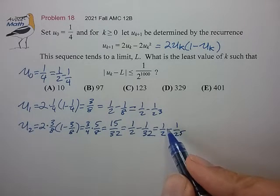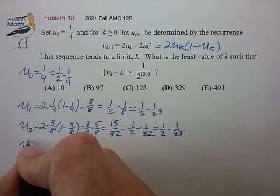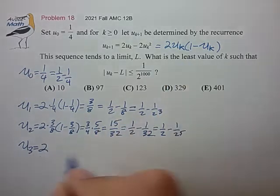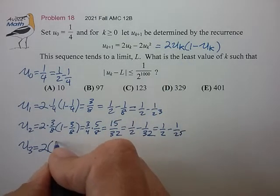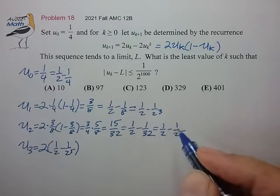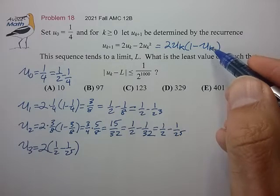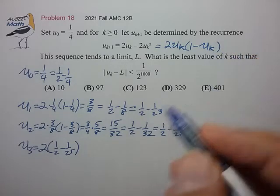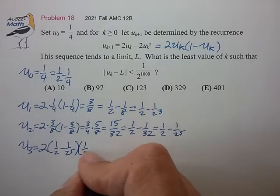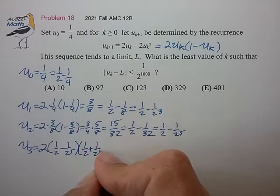And I can use this now to calculate u₃, with 2 times 1 half minus 1 over 2 to the fifth. And now 1 minus this uₖ is a number that's just above 1 half by 1 over 2 to the fifth plus 1 over 2 to the fifth.